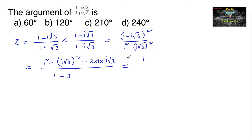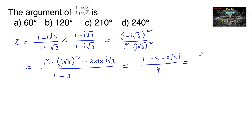Substituting i² = -1, the numerator becomes 1 + (-1)(3) - 2√3 i = 1 - 3 - 2√3 i = -2 - 2√3 i. The denominator is 1 + 3 = 4. So z = (-2 - 2√3 i) / 4.